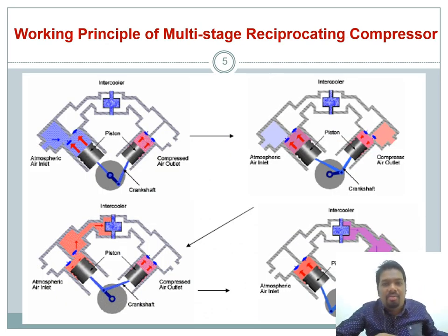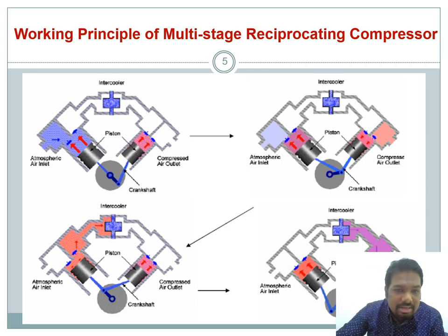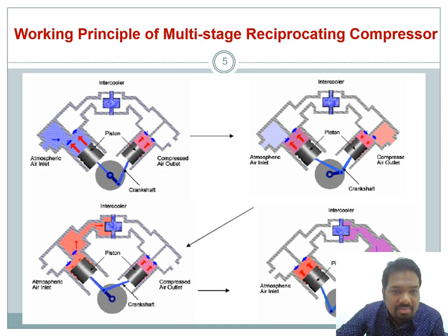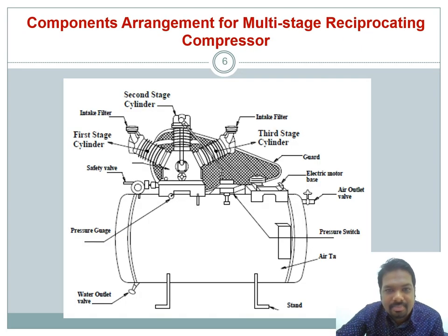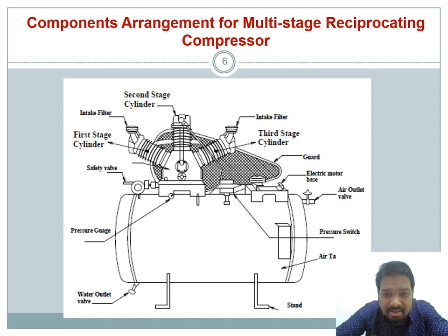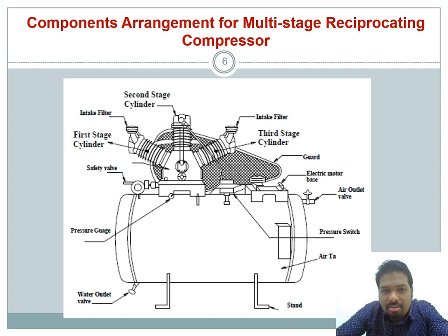The working principle of the multi-stage reciprocating compressor shows atmospheric air entering as the piston moves downward, then being compressed and sent to the intercooler. The temperature is reduced before passing to the second piston stroke. Multi-stage reciprocating compressors are commonly found in factories, and smaller versions can be seen at markets.